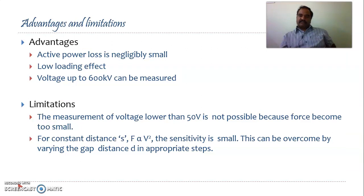Coming to the advantages and limitations, the active power loss is negligibly small because you do not have any direct contact of the moving plate with your high voltage terminal, and there are no resistive elements also here. So the active power loss is going to be very low. Loading effect, because of low power loss, there will be no loading effect, very minimal loading effects. And it can be used to precisely measure voltage beyond 500 kV also, sometimes even to 1 MV also with precision.